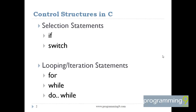However, in practice, we have a number of situations where we may have to change the order of execution of statements based on certain conditions. C has different types of control structures — that is, selection statements and looping or iteration statements.